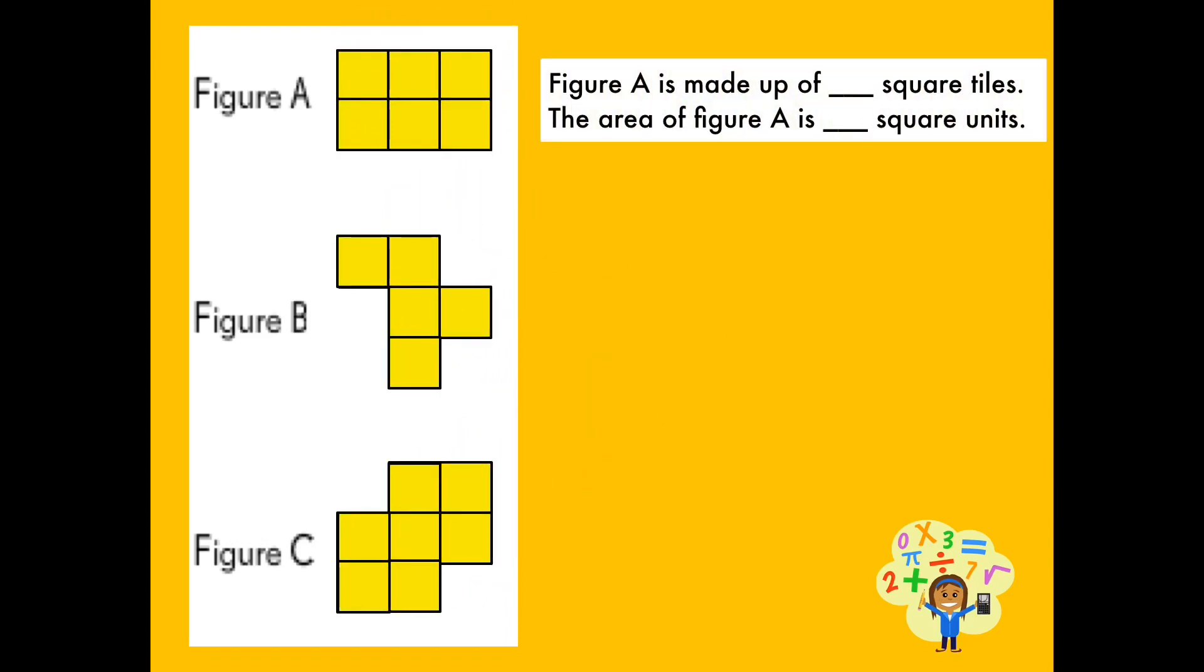How many pieces of square tile covered figure A? The fastest way to count the tiles is to do it by threes or by twos. Three, six. Figure A is covered with six square tiles. We can say that the area of figure A is six square units.